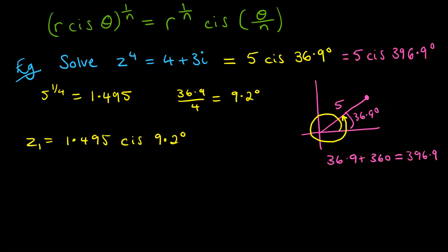So we have this equivalent polar form to this one where we added on that 360°. So now our argument is 396.9°. So our second solution for what z could be is now the modulus hasn't changed, so that's still 1.495. But we've got cis of 396.9 divided by 4, which comes to 99.2°.